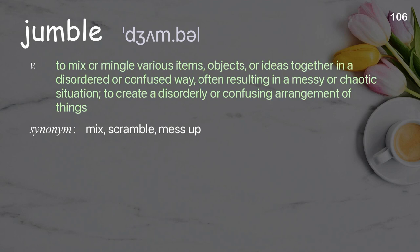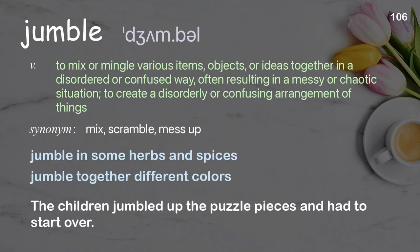Jumble: to mix or mingle various items, objects, or ideas together in a disordered or confused way, often resulting in a messy or chaotic situation; to create a disorderly or confusing arrangement of things. Examples: jumble in some herbs and spices, jumble together different colors. The children jumbled up the puzzle pieces and had to start over.